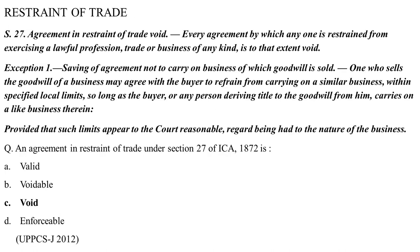Moving to the more important Section 27 on restraint of trade: every agreement by which one is restrained from exercising a lawful profession, trade or business of any kind is, to that extent, void. The exception is the saving of agreements not to carry on business of which goodwill is sold — one who sells the goodwill of a business may agree with the buyer to refrain from carrying on a similar business within specified local limits so long as the buyer or any person deriving title to the goodwill carries on a like business therein, provided such limits appear reasonable.